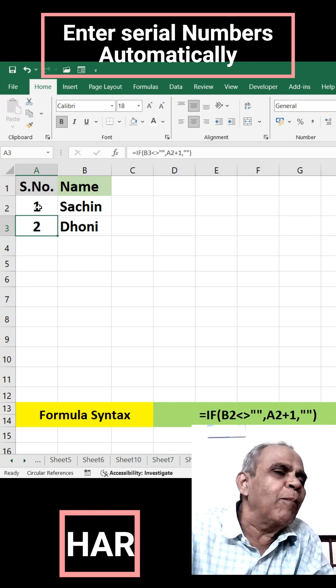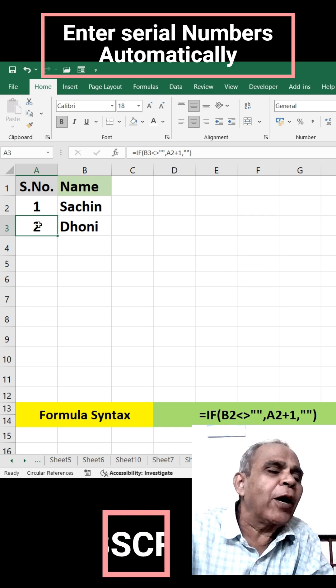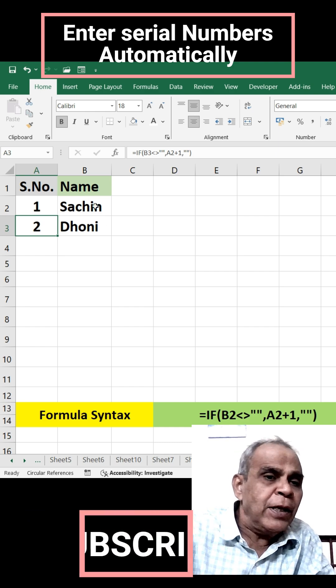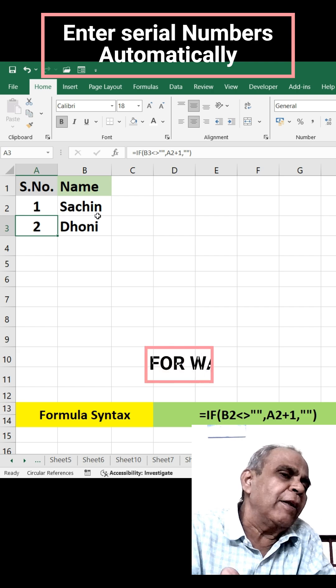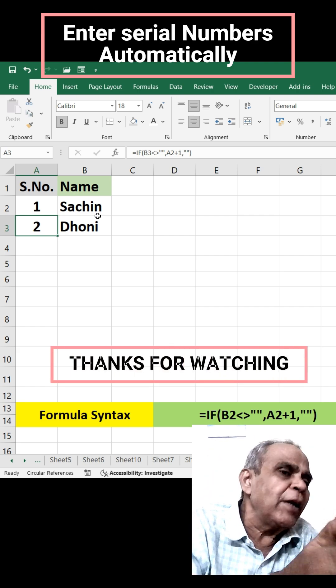A2 value is 1. Plus 1 is 1 plus 1, which equals 2. Automatically, 2 will enter. Suppose here, the name is not there. Then A3 also remains blank.